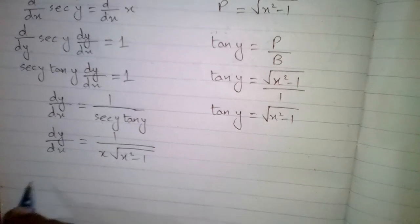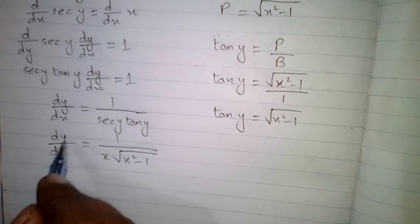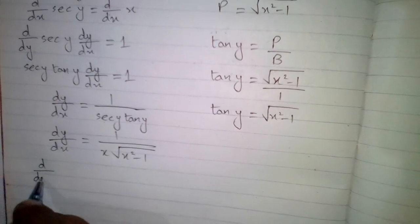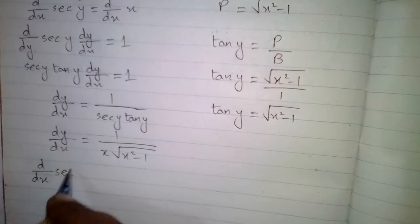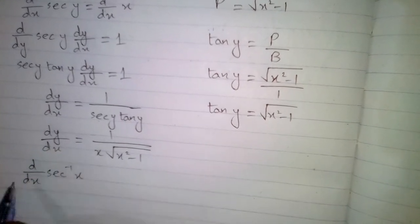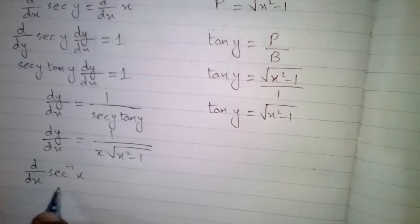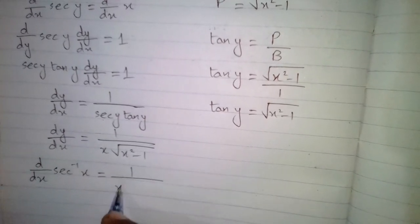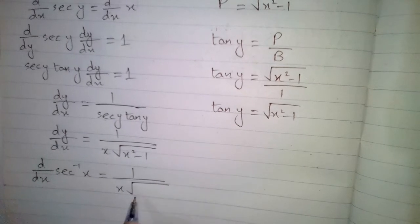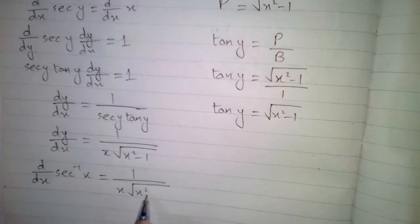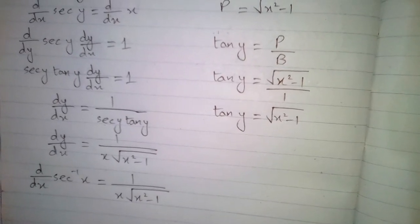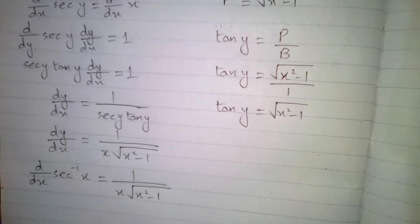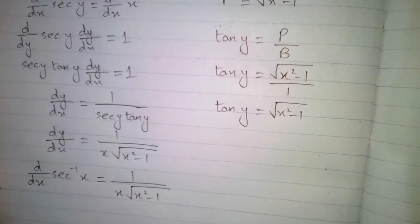The value of y is sec inverse x, so we can write sec inverse x in place of y. Therefore d by dx of sec inverse x equals 1 upon x square root of x square minus 1. So the derivative of sec inverse x is 1 upon x square root of x square minus 1.